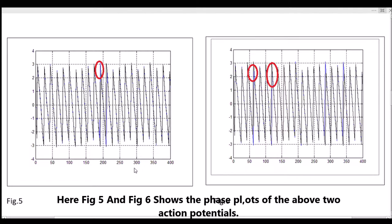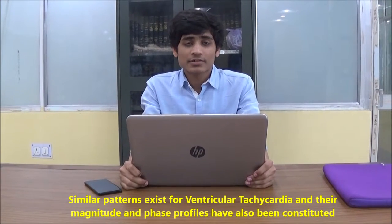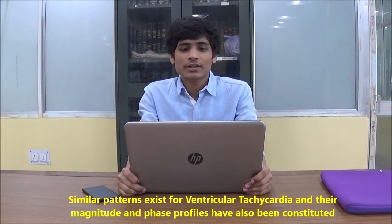Figures 5 and 6 show the phase plots of the two above action potentials. Here we can see a perceptible change which can be used to detect the abnormalities.